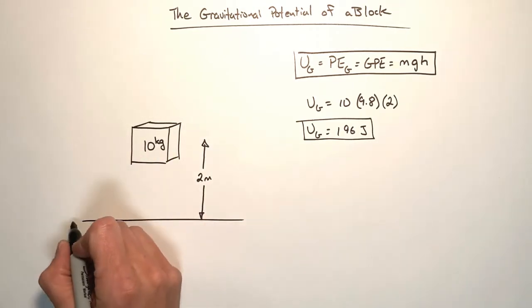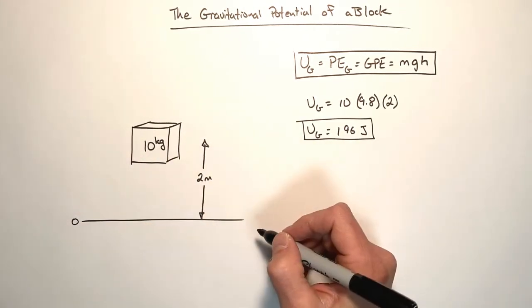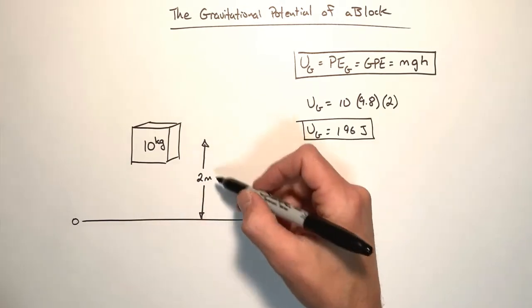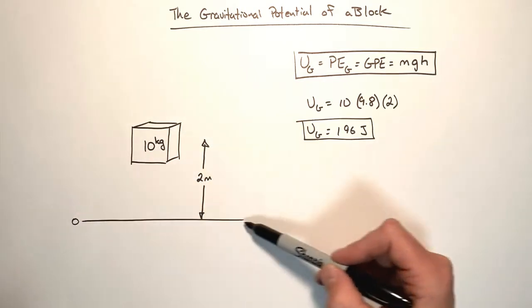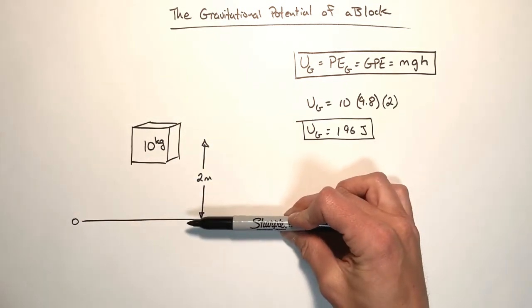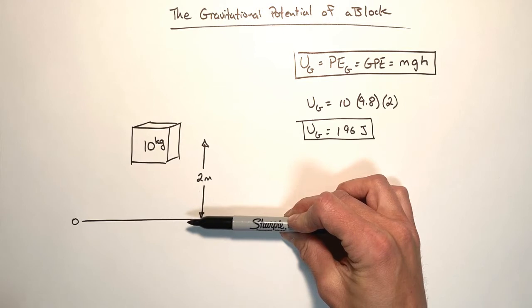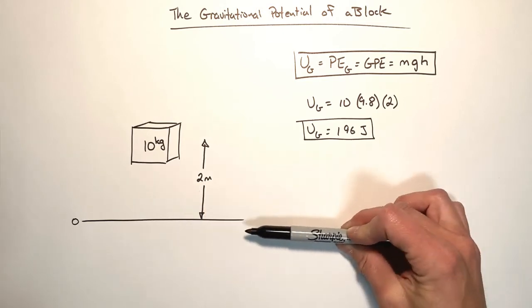What we've done in this problem is we've gone through and we've said that the ground was a height of zero or a position of zero. And we're measuring the potential energy of this block relative to this. Well, let's say this is a floor in your house. Well, really, where is a height of zero?